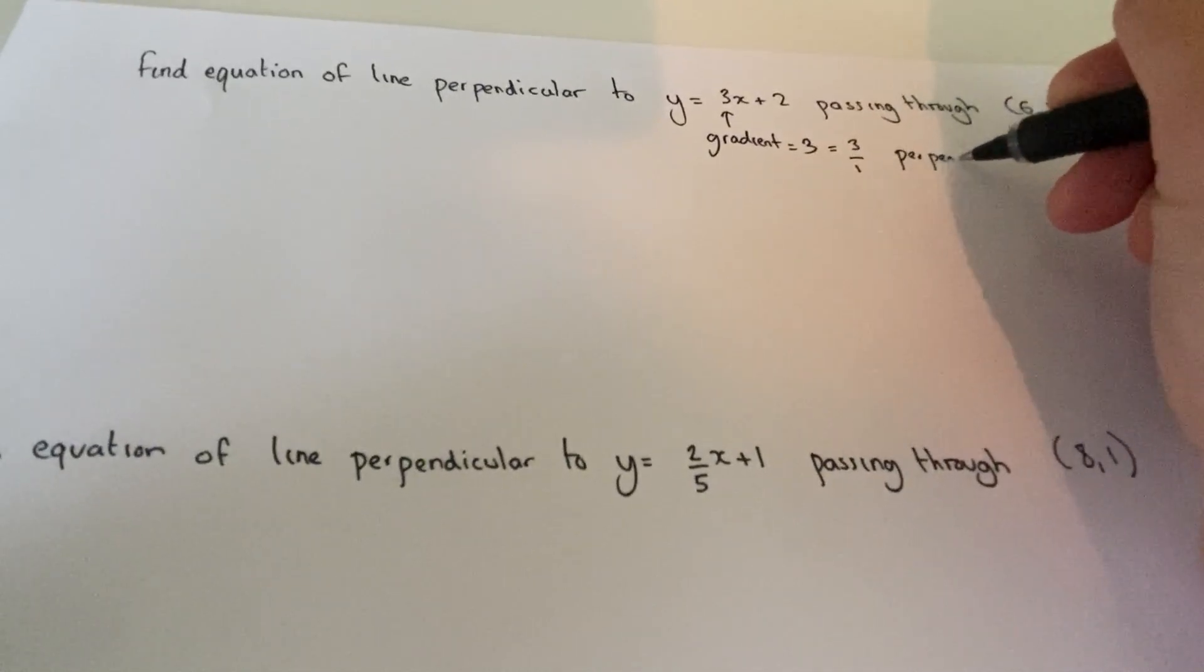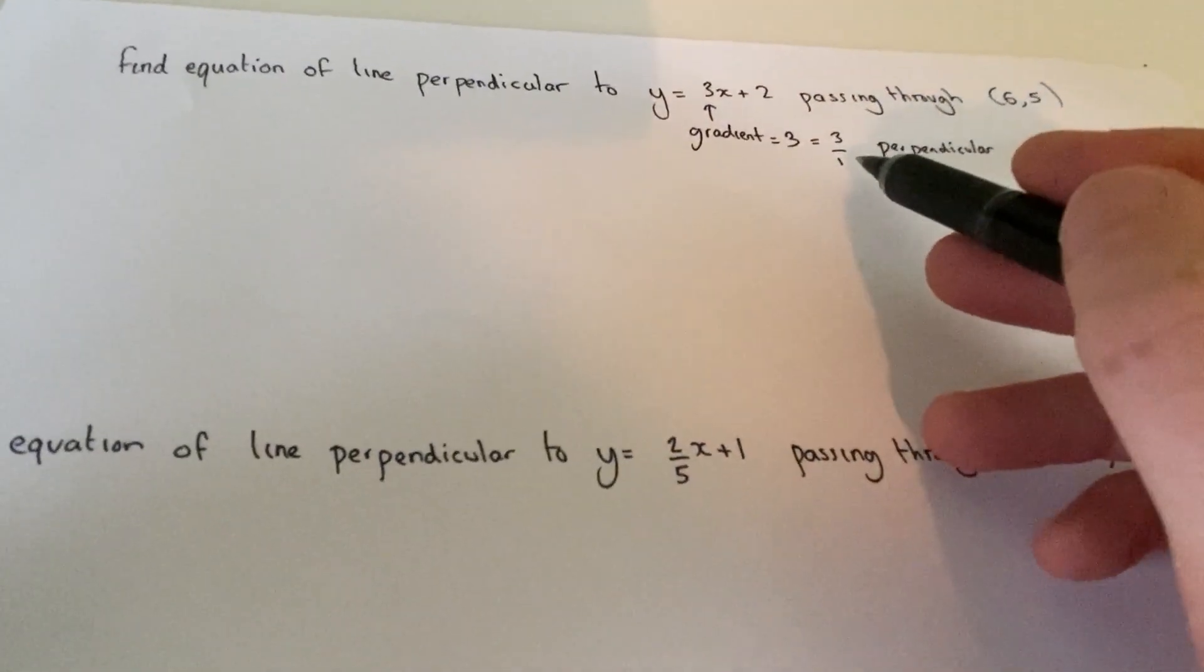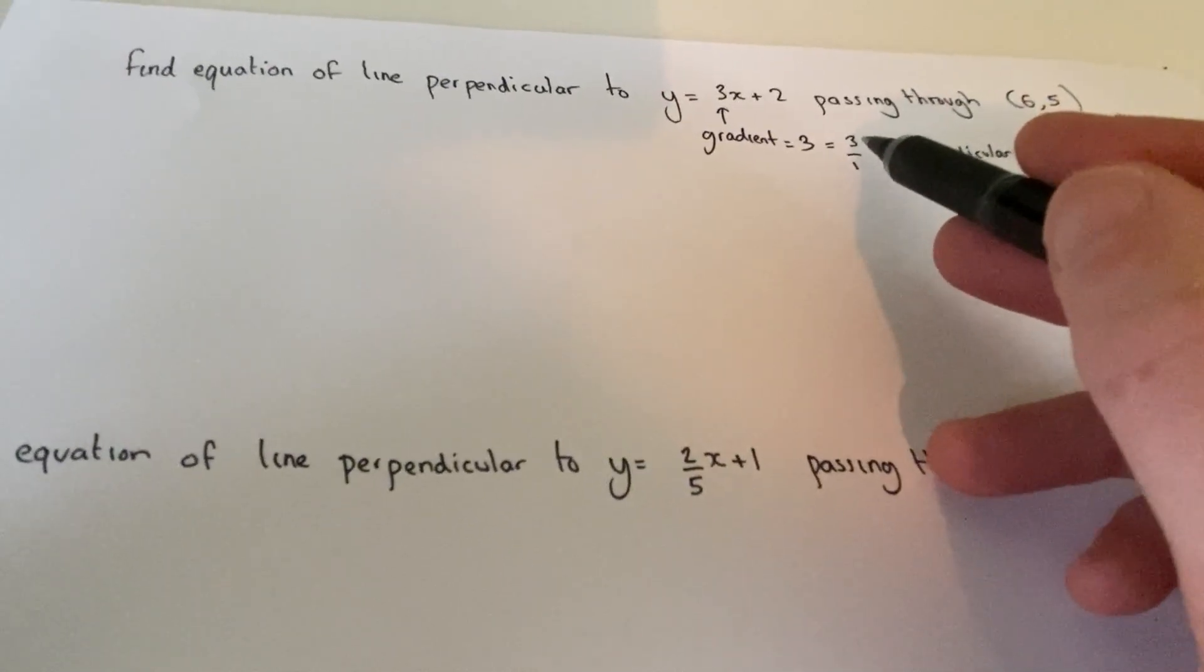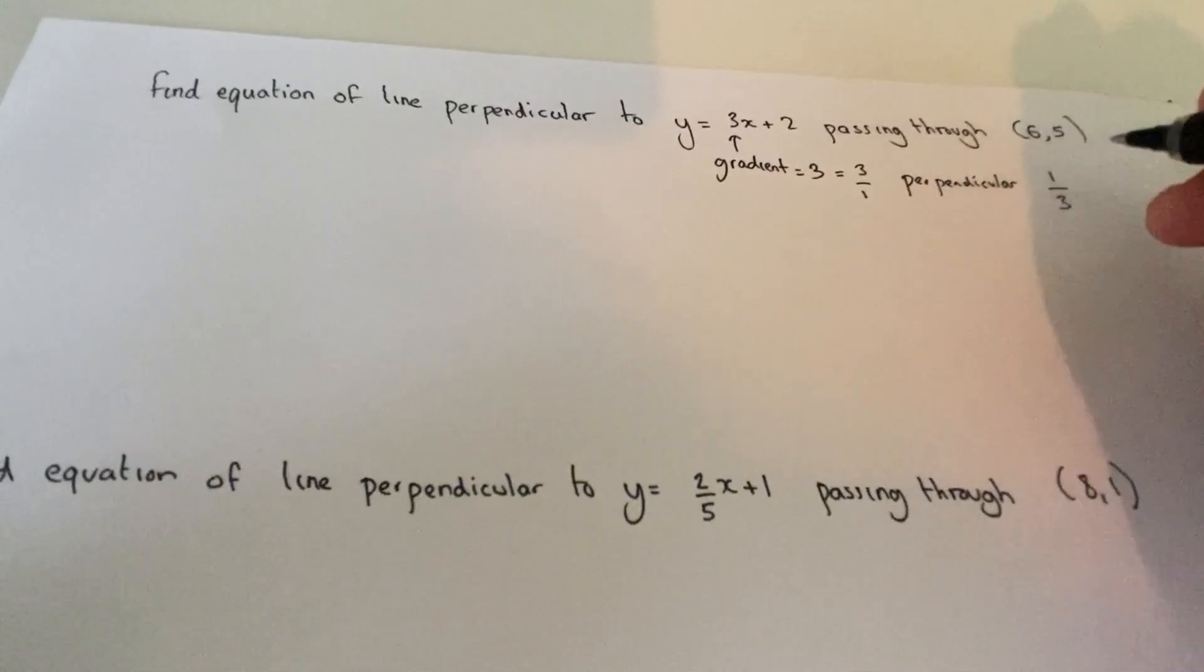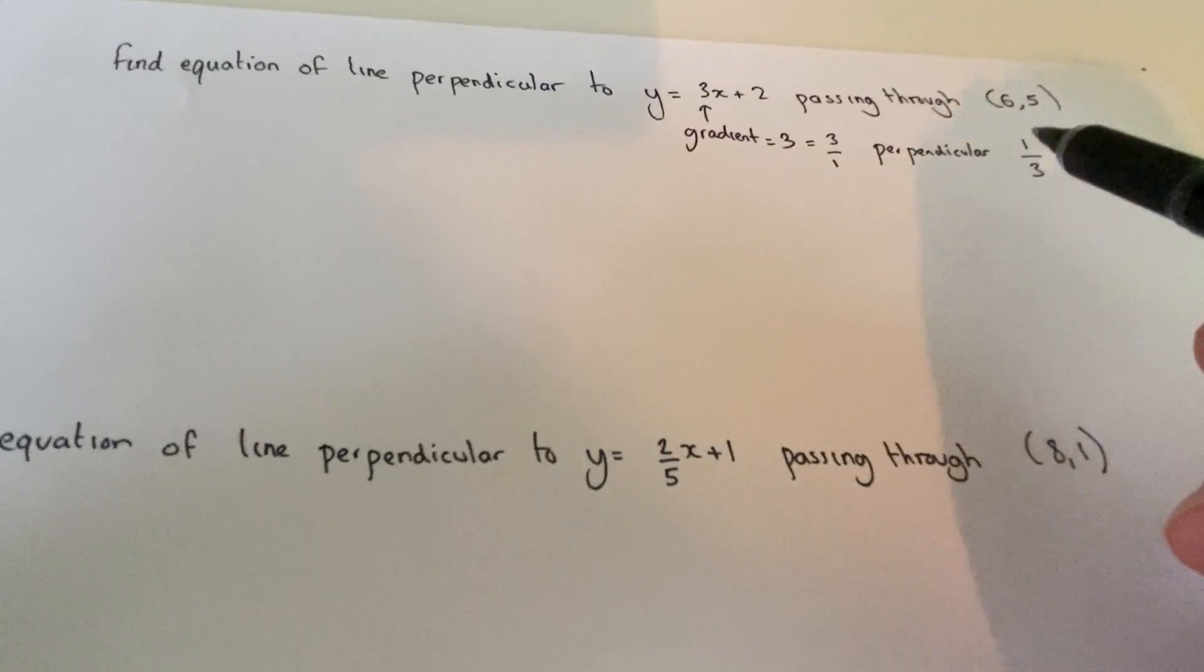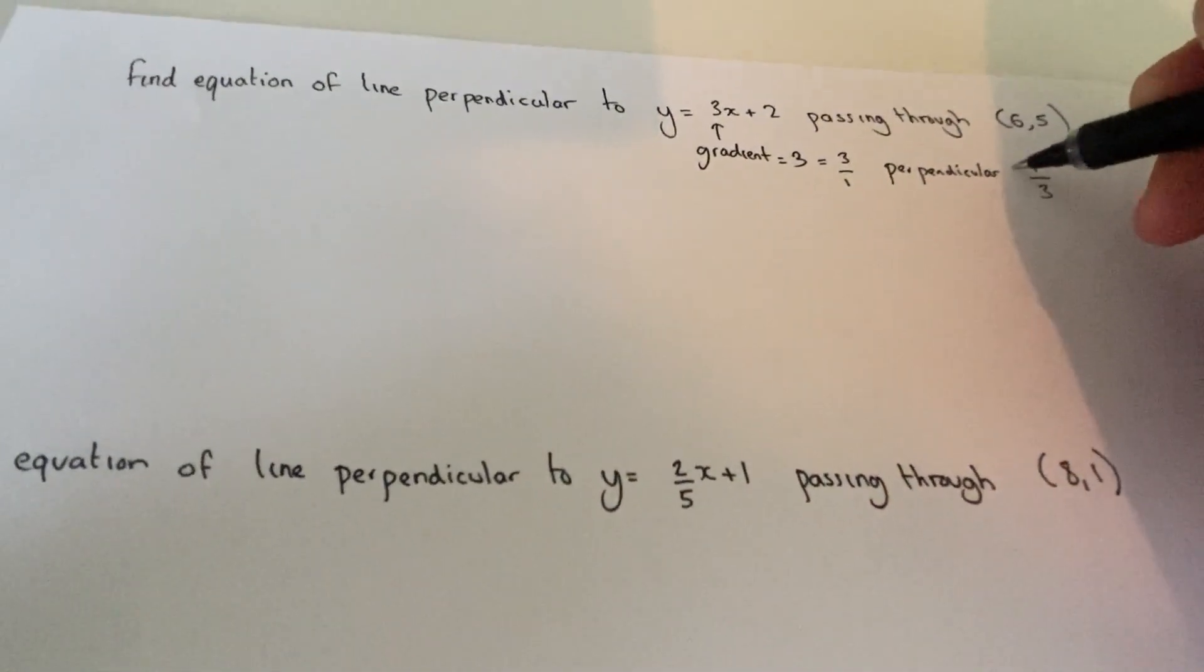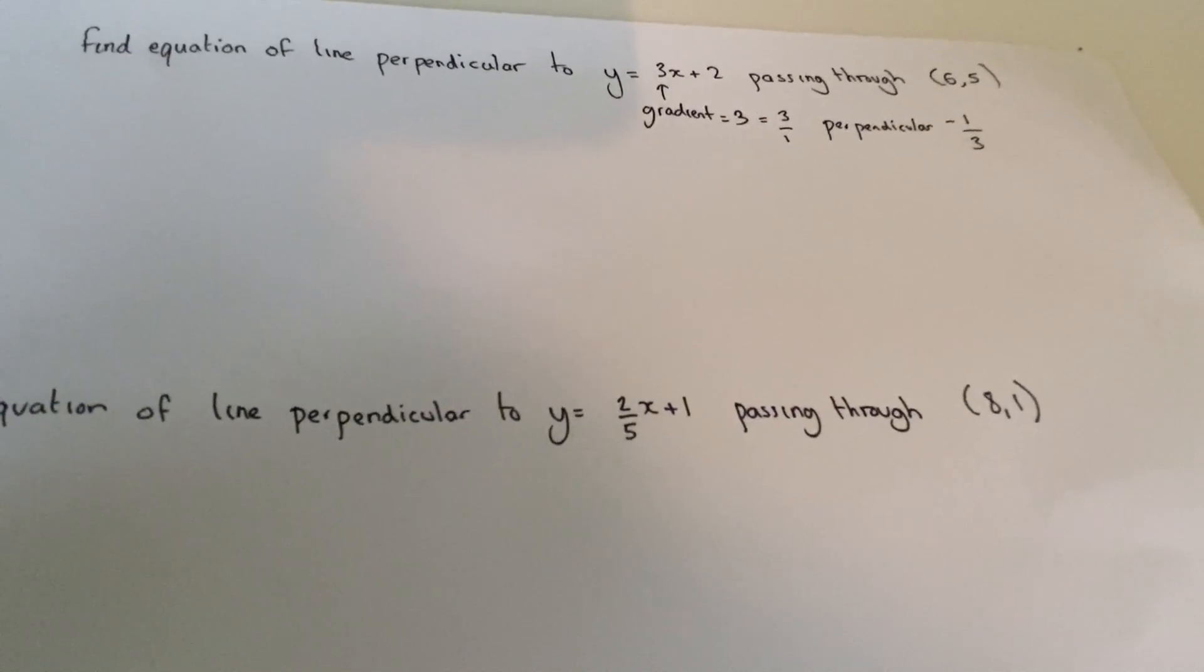...rather than go 1 across and 3 up, it now goes 3 across and 1 down. So what happens is the fraction effectively flips but it's now going down so it becomes negative. So the perpendicular gradient is minus a third.